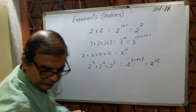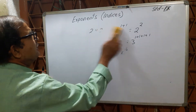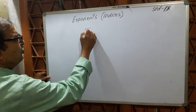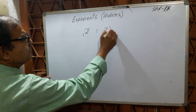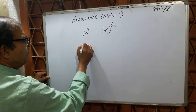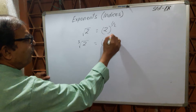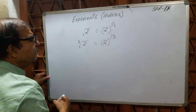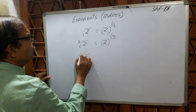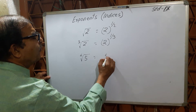Now, if the sign is a square root, for example √2, you write it as 2^(1/2). If it is a cube root, it is 2^(1/3). Similarly, the fourth root of 5 is written as 5^(1/4).